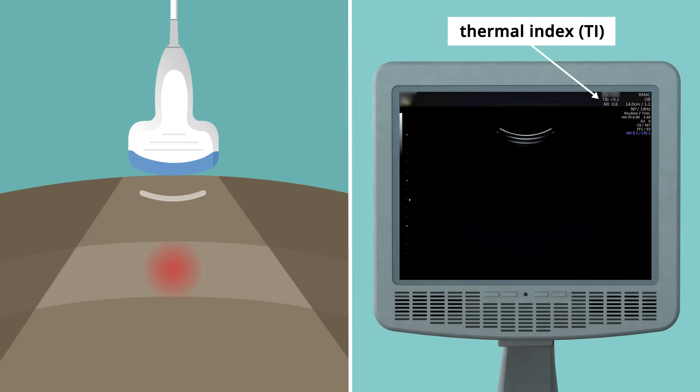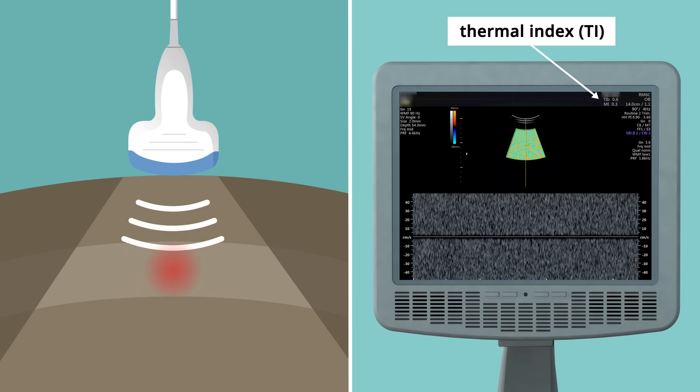A small increase in temperature is acceptable, but it is advisable to keep the TI below 1 wherever possible. Doppler sonography uses a pulsed signal which creates a lot of heat and has the highest TI. For this reason, Doppler should not be used in the first 12 weeks of pregnancy unless clinically indicated.